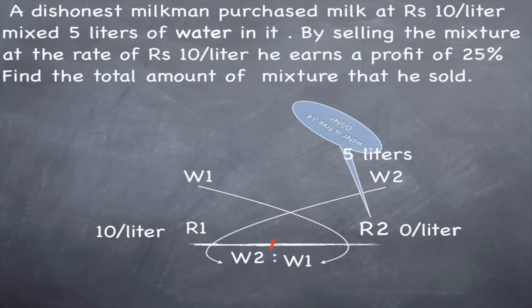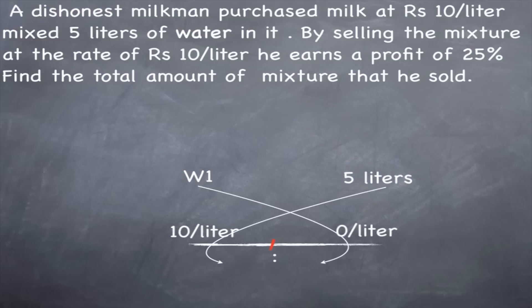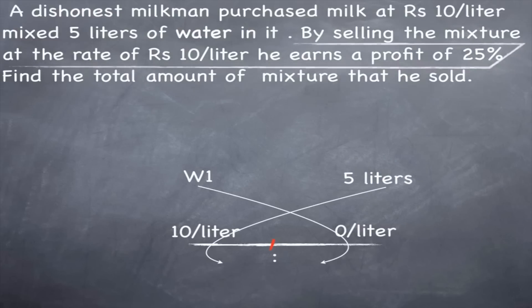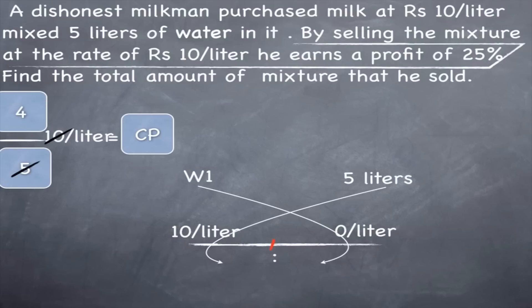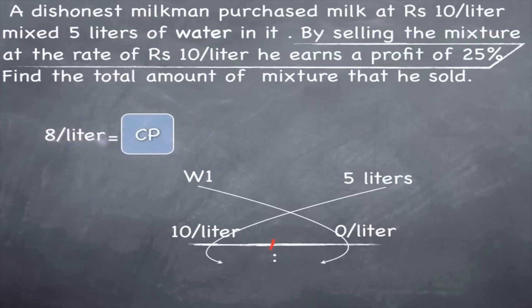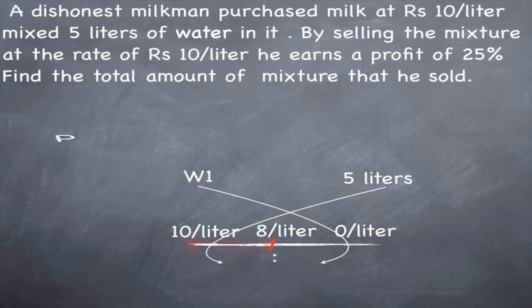By selling the mixture at Rs.10, he makes a profit of 25%. That means SP equals 5 by 4 times CP. I know SP is 10, so 10 equals 5 by 4 times CP, giving CP equals 8. So the overall cost price is Rs.8 per liter — because his overall profit is 25%, selling price is 10, and cost price is 8.